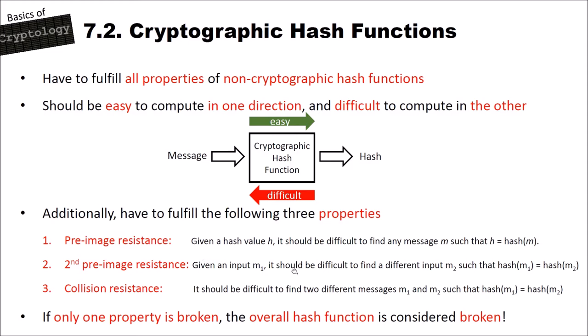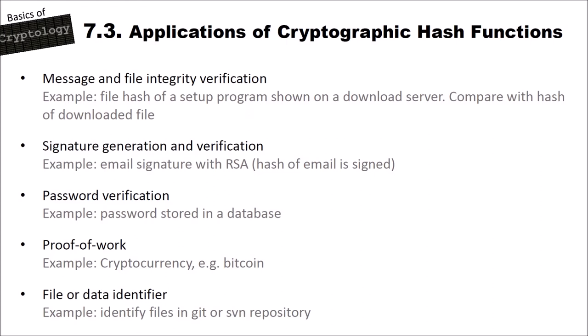Now let's look at applications of cryptographic hash functions. The first application is message and file integrity verification. An example is a file hash of a setup program shown on a download server. You download an executable, compute the hash value of your downloaded file, and compare it with the hash from the download page. If the hashes are different, you know the setup program was modified before or during download — maybe there's a virus inside or it's a different version, so you shouldn't execute it.